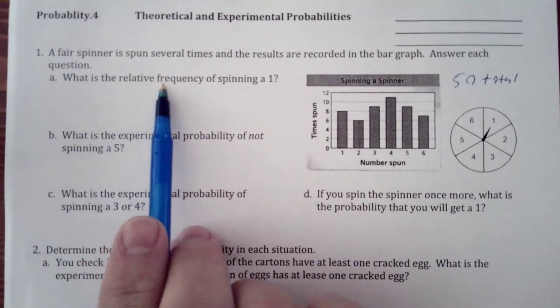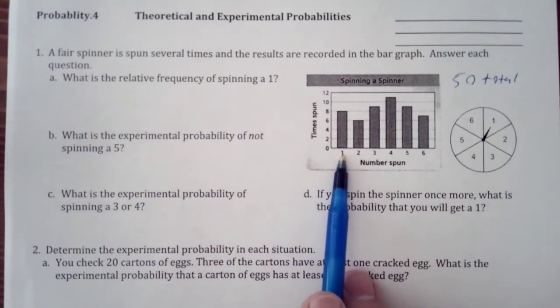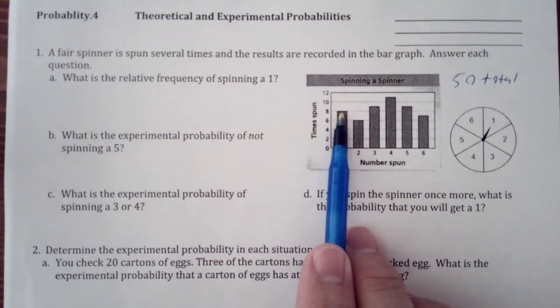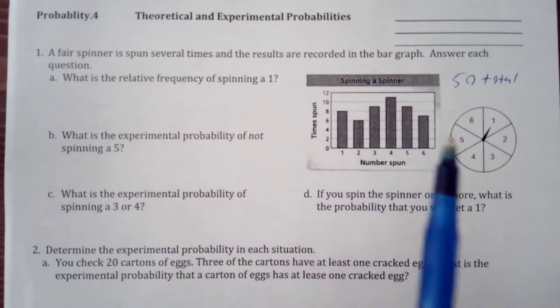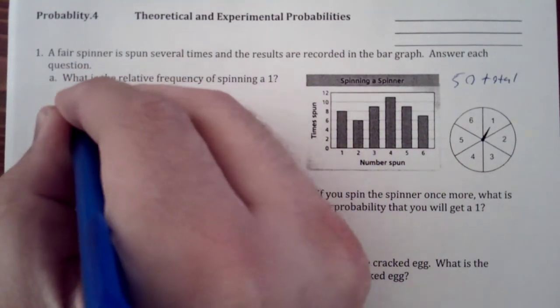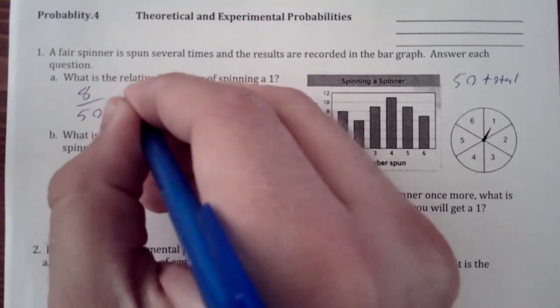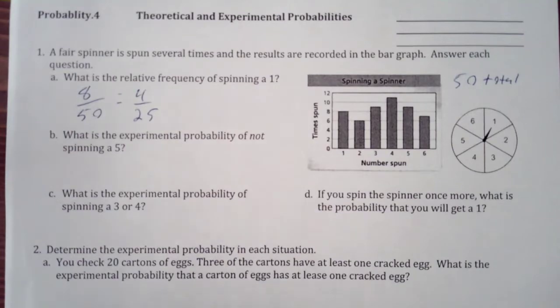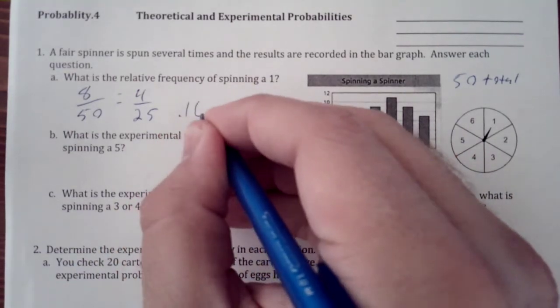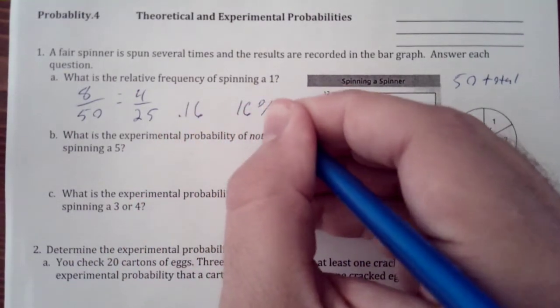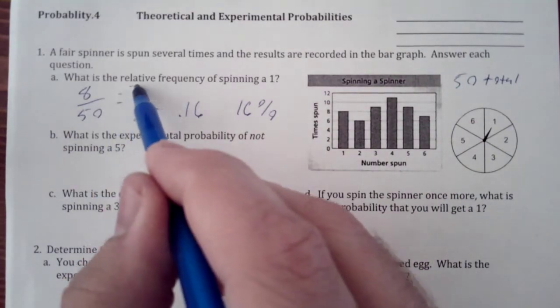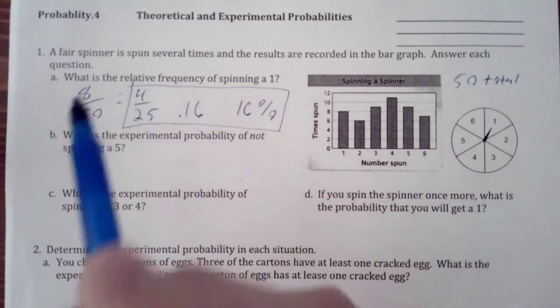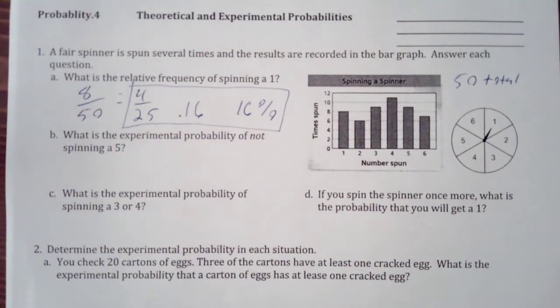What is the relative frequency of spinning a 1? So we have a 1, we have 8 times, so we have 8 over 50, or 4 over 25. And that is 0.16 or 16%. So all three of those are ways you can express that relative frequency.